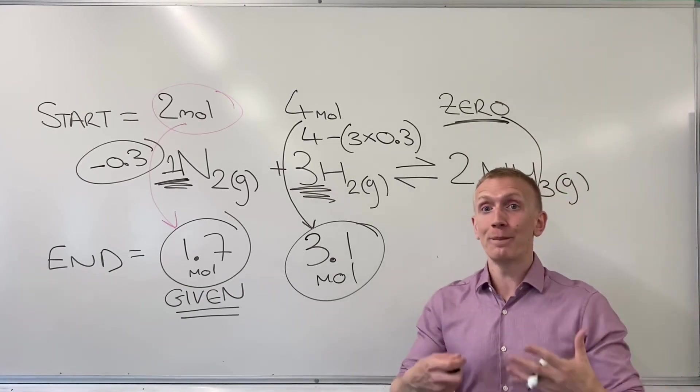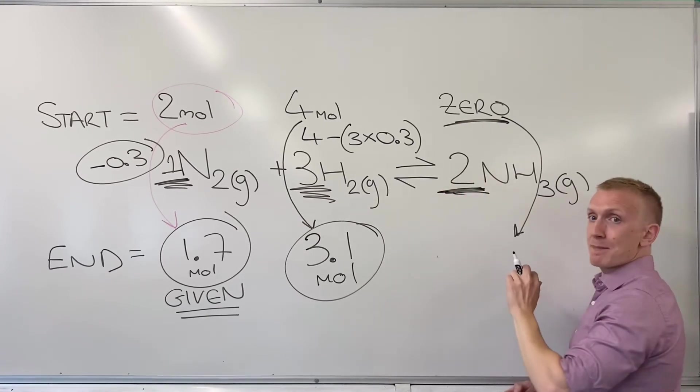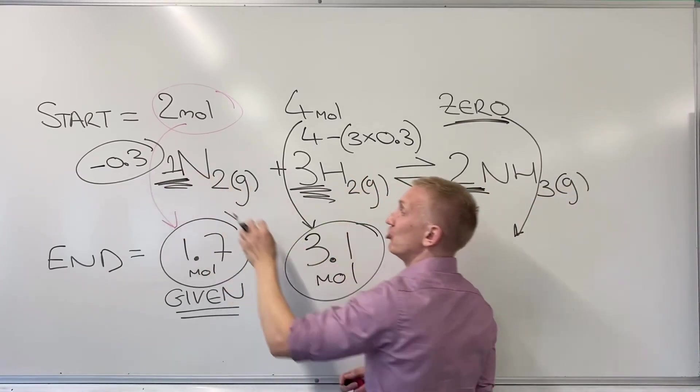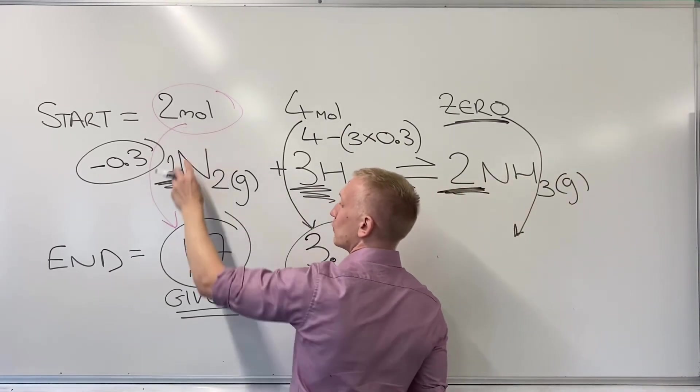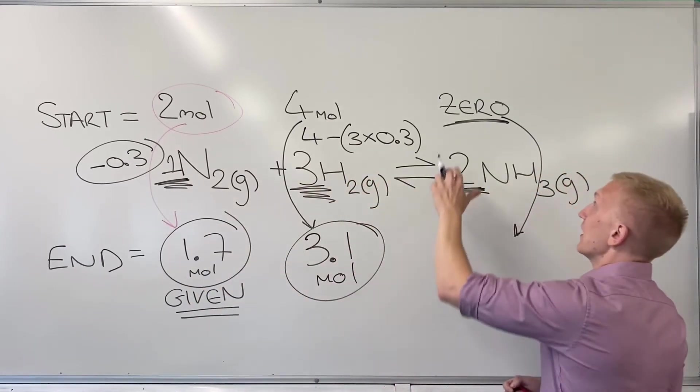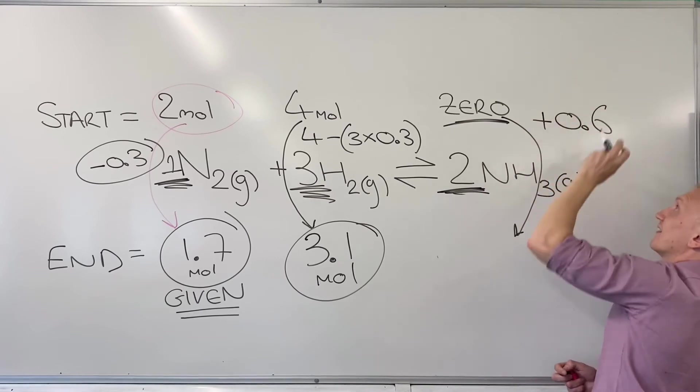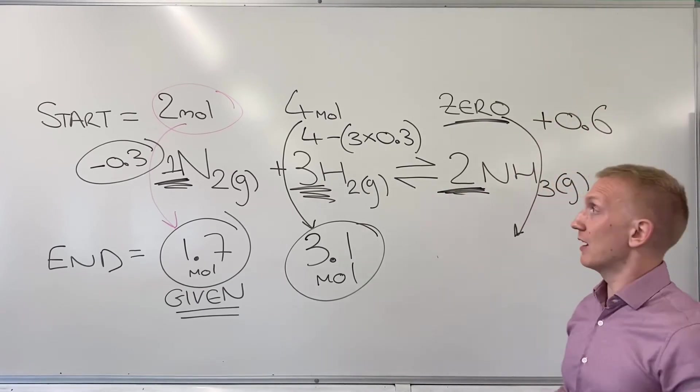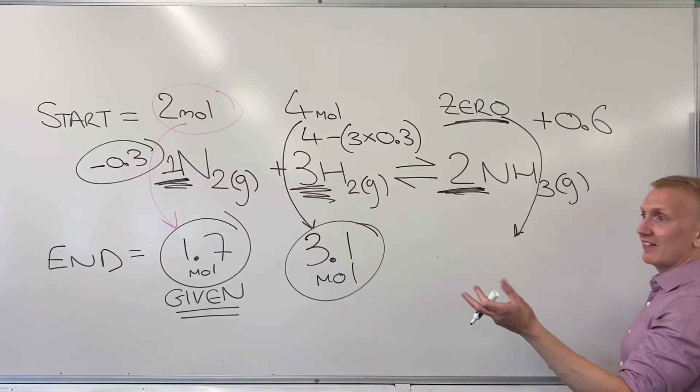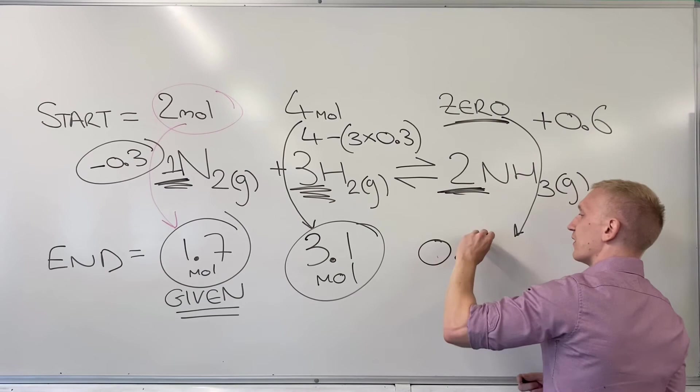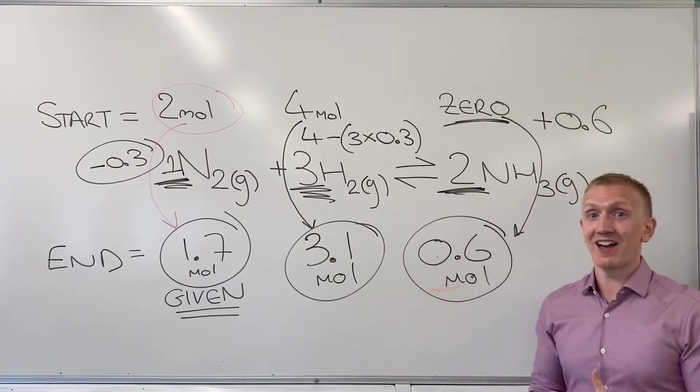How much is it going to go up by? Well it's going to go up by twice the amount the nitrogen went down by so you've got to be careful here a little bit. If this went down by 0.3 this is going to go up by 0.6 which is 2 times 0.3 because of that 1 to 2 ratio and because they started at 0 we have an obvious value here of 0.6 mole for my moles of ammonia at equilibrium.